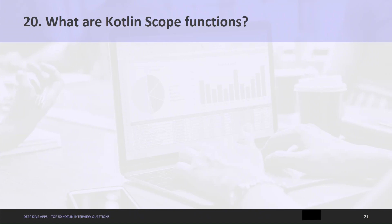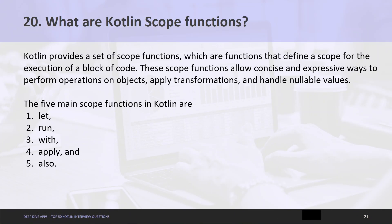Question 20: What are Kotlin scope functions? Kotlin provides a set of scope functions, which are functions that define a scope for the execution of a block of code. These scope functions allow concise and expressive ways to perform operations on objects, apply transformations, and handle nullable values. The five main scope functions in Kotlin are: let, run, with, apply, and also.